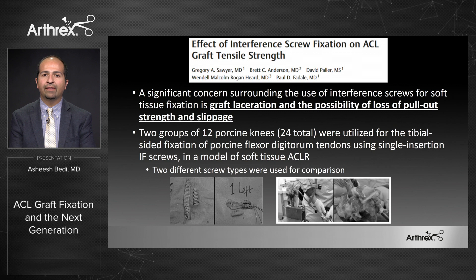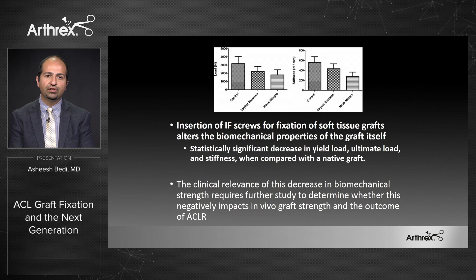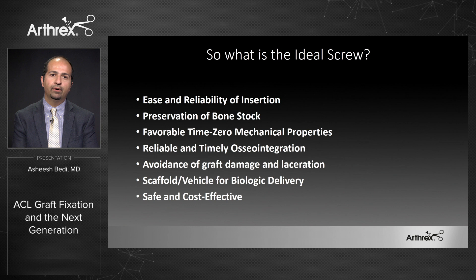Another study highlights that graft laceration or pullout slippage at time zero is a concern with soft tissue grafts. What they found was that insertion of interference screws did fundamentally alter the biomechanical properties of the graft itself — it decreased yield load, ultimate load, and stiffness when compared to a native graft. Inserting an interference screw with a soft tissue graft may not be benign, and to do this right we need all the right principles and aspects of our screw.